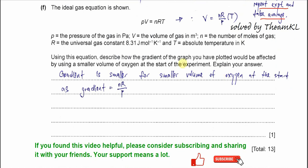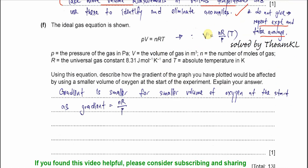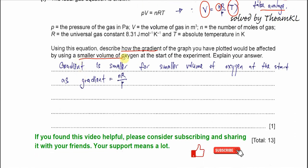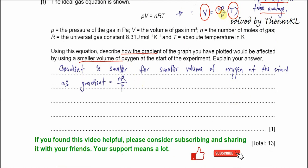Part F: The ideal gas equation is PV = nRT. In this question, the y and x-axis are volume and temperature, so the gradient is actually nR over P. n is the moles of gas. Describe how the gradient of the graph would be affected using a smaller volume of oxygen. If smaller volume of oxygen, the moles are less. Therefore, this gradient value will be smaller. Gradient is smaller for smaller volume of oxygen because n is lower. That's all, thank you.